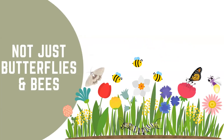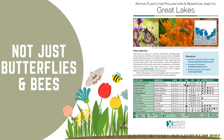Not all pollinators are butterflies or bees. There are many different insects that help pollinate, such as moths, beetles, and even lightning bugs. Pollinators also have larval stages that need support, like caterpillars. Consider this when choosing garden plants and try to pick some that will support the caterpillars and larvae of pollinators. Beyond milkweed supporting the monarch caterpillar, there are lots of other host plants to consider. The Xerces Society has a wonderful resource showcasing native plants for pollinators and beneficial insects, which I'll include in your follow-up email.